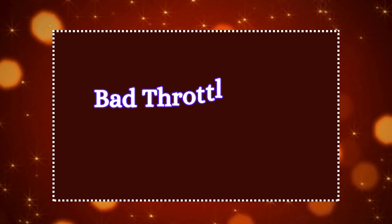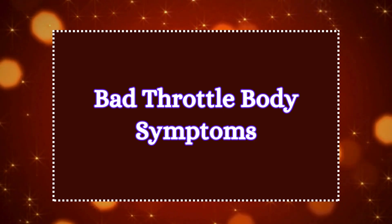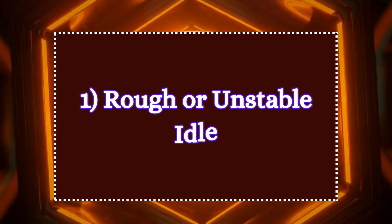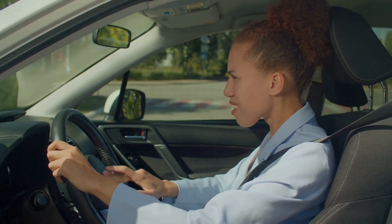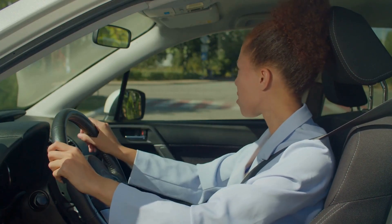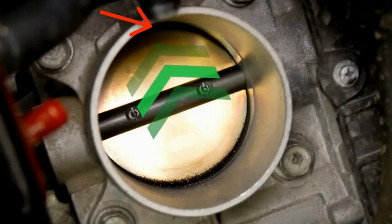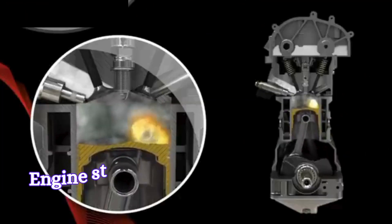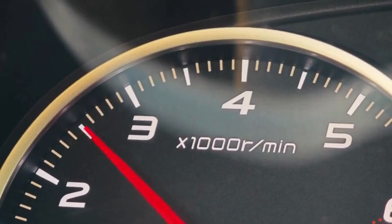A bad throttle body can cause a range of performance issues in a vehicle. Let's discuss the common signs of a bad or clogged throttle body. 1. Rough or unstable idle. Rough or unstable idle is one of the most common symptoms of a bad throttle body. A bad or dirty throttle body may not be able to provide the proper amount of air to maintain a stable idle. As a result, the engine struggles to regulate the air fuel mixture, leading to an unsteady idle speed.